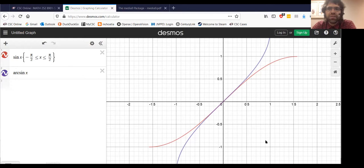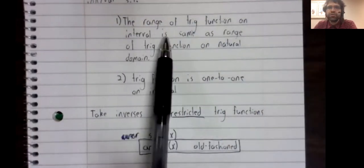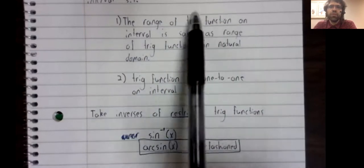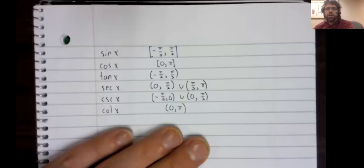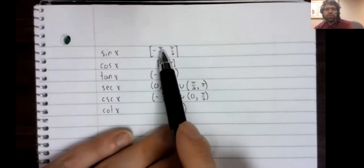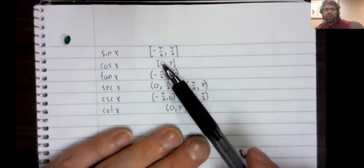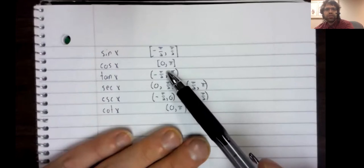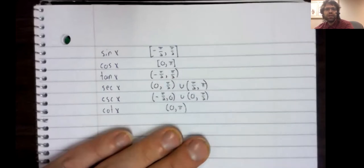Let's end this video with a summary. Every trig function is restricted to some interval so that we can take its inverse. That interval is different for the different trig functions. Here are the restrictions: the sine of x on the closed interval from negative pi over 2 to pi over 2; the cosine from 0 to pi, again a closed interval; the tangent from negative pi over 2 to pi over 2, but this time an open interval.